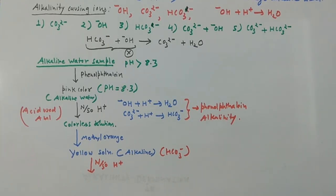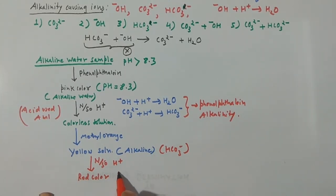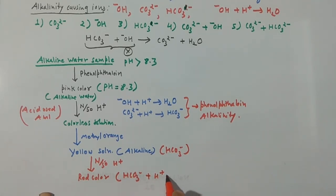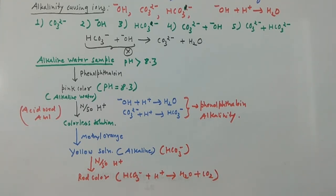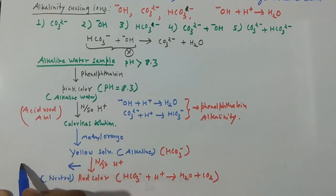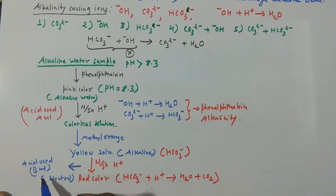We again titrate with N/50 acid. At the endpoint, the yellow color turns red. This red color appears because the bicarbonate ion reacts with H⁺: HCO₃⁻ + H⁺ → H₂O + CO₂, making the solution neutral. The additional volume of acid used in this step is noted as 'B ml'. The total acid used is (A + B) ml.